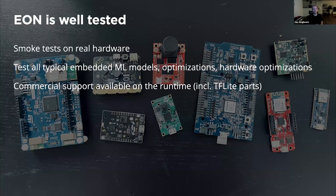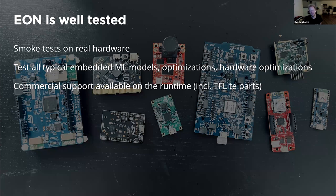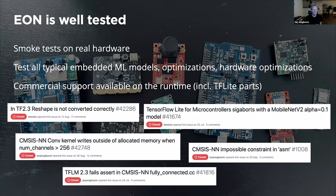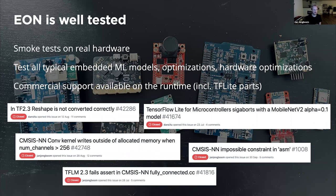EON is also really well tested. For every release, we run smoke tests on real hardware with real models and all optimizations enabled. We deliver commercial support — rather than relying on just an open source project. We find a lot of bugs, including writing outside of boundaries in ARM code, use-after-free bugs, and incorrect reshape layers in CMSIS-NN and TF Lite kernels. These are all fixed and contributed back to open source projects, but we only deliver something we know is stable.